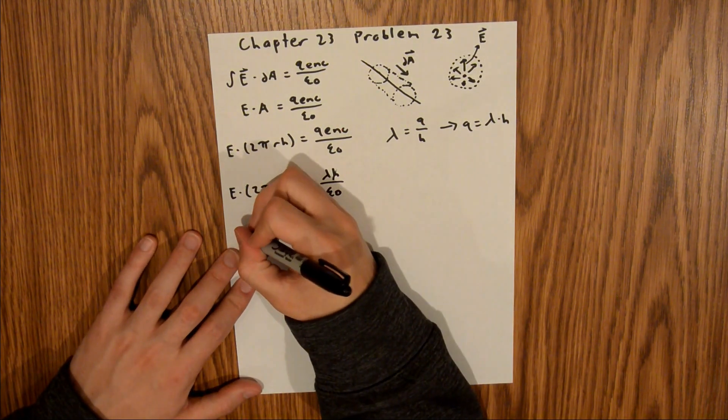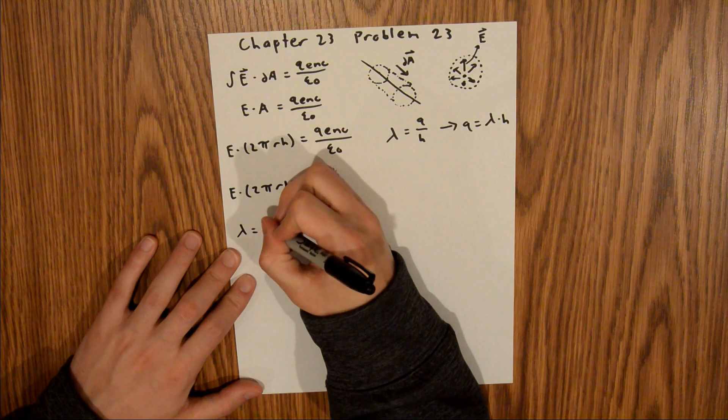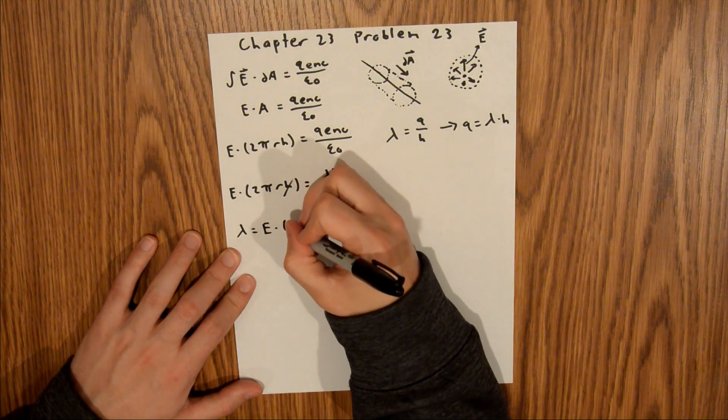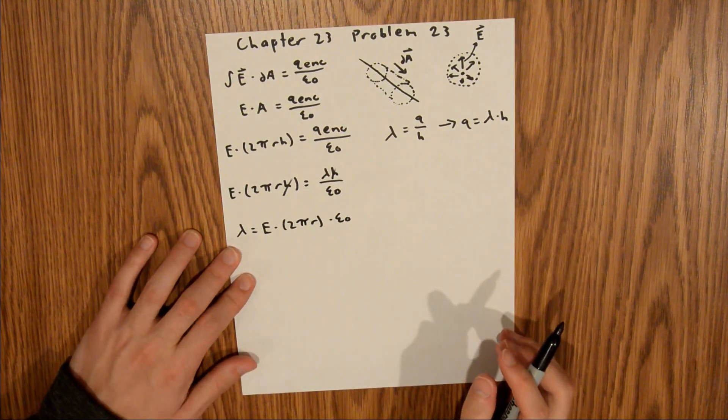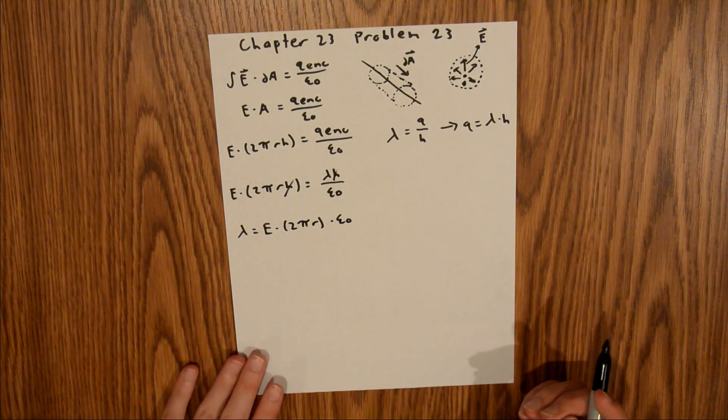and that's going to leave us with the linear charge density is equal to E times 2 pi r times epsilon naught. And now we actually have all those values.